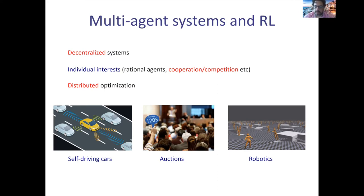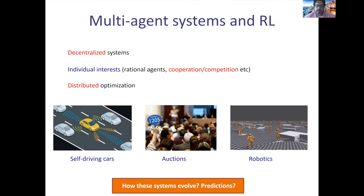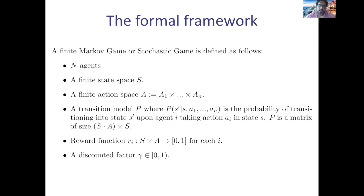Let's see formally how this is defined. We're interested in the behavior of these systems — how they evolve and what predictions we can make about their long-term behavior. A multi-agent Markov decision process is called a Markov game or stochastic game in the literature. It's a generalization of Markov decision processes.